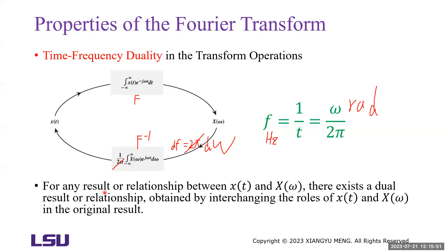For any result or relationship between x(t) and X(omega), there exists a dual result or relationship obtained by interchanging the roles of x(t) and X(omega) in the original result. You will see many examples of this.